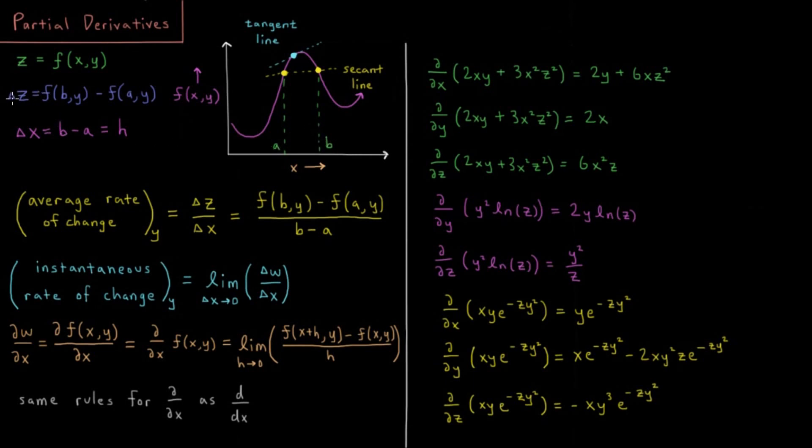So we've got delta z, change in the function, equals f of b,y minus f of a,y. Whatever y is, it's the same at both points. Then once again we have delta x, which is the width of the region, b minus a, or what we might call h.